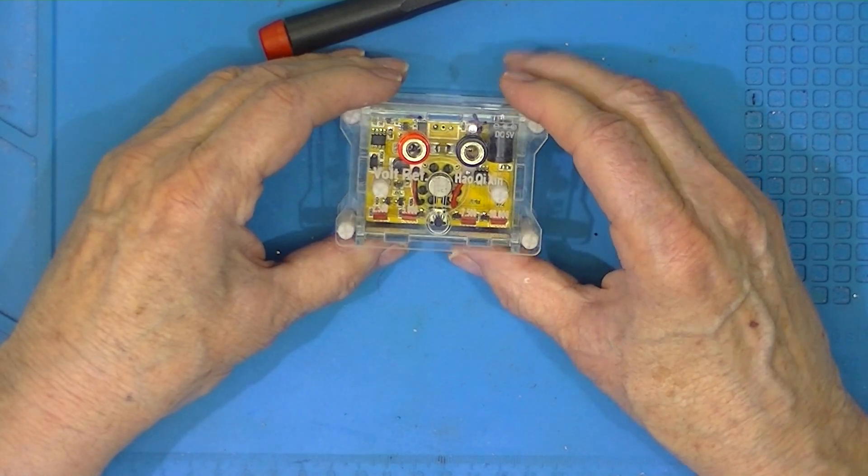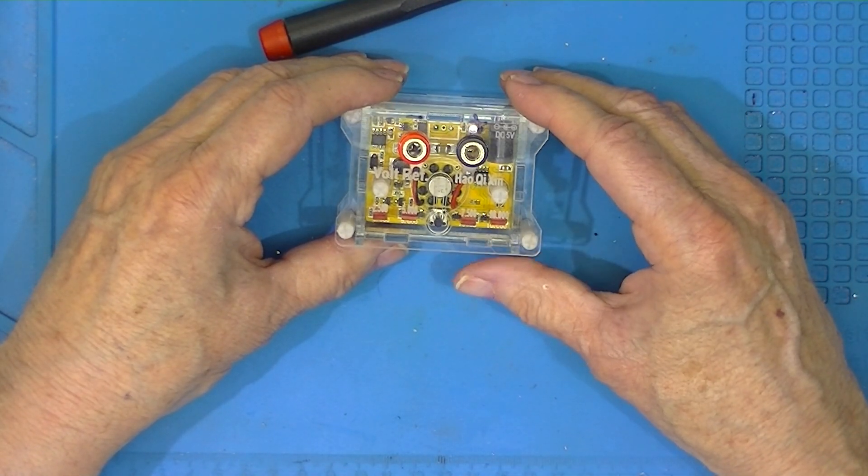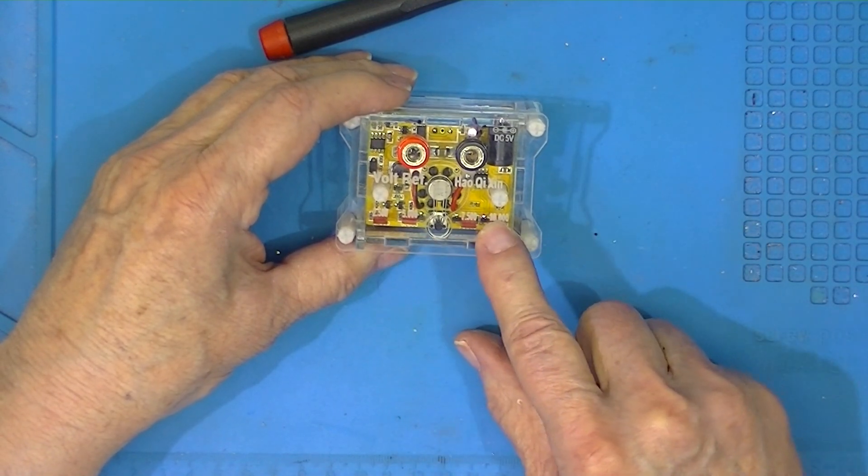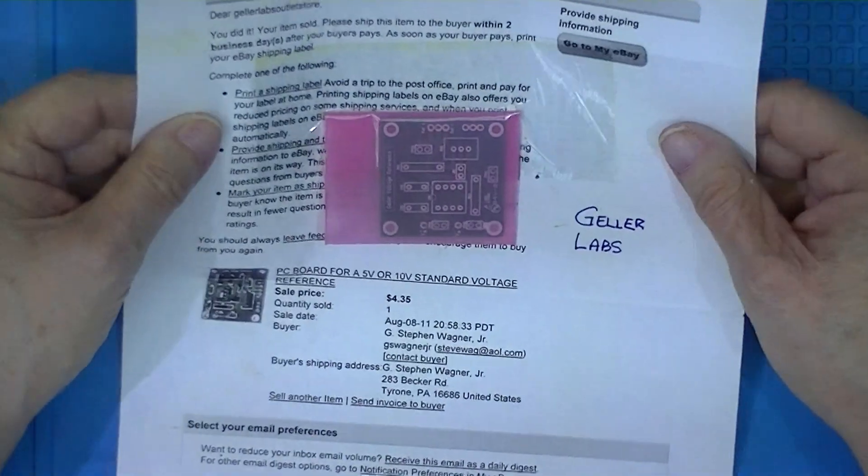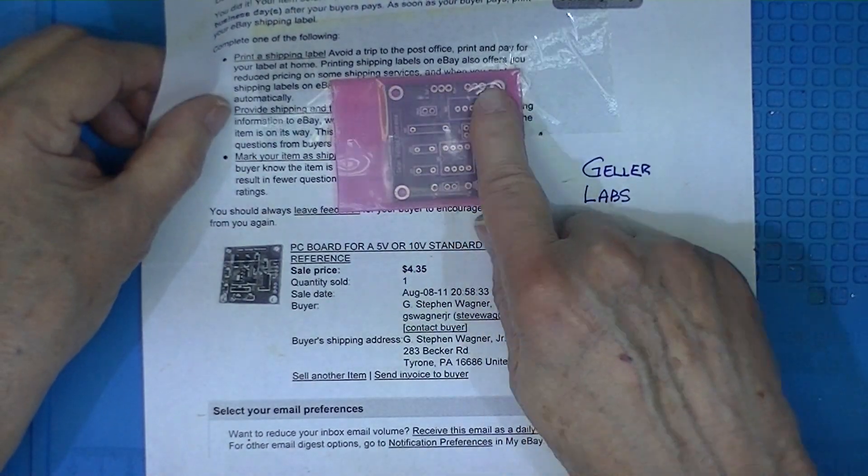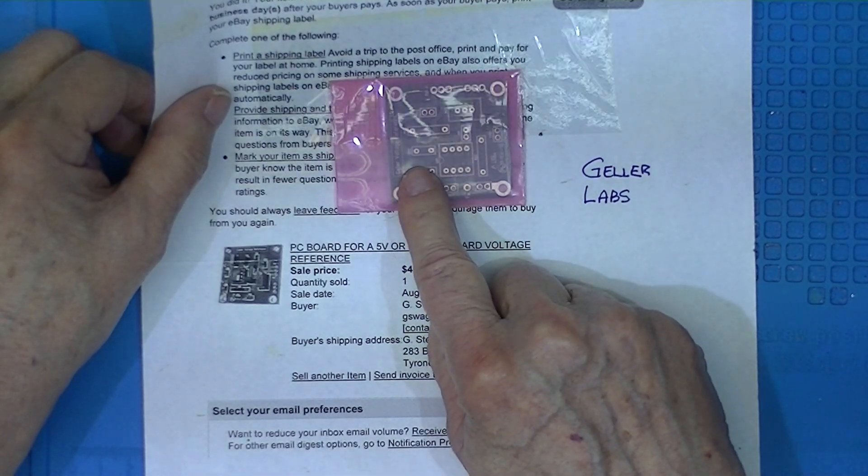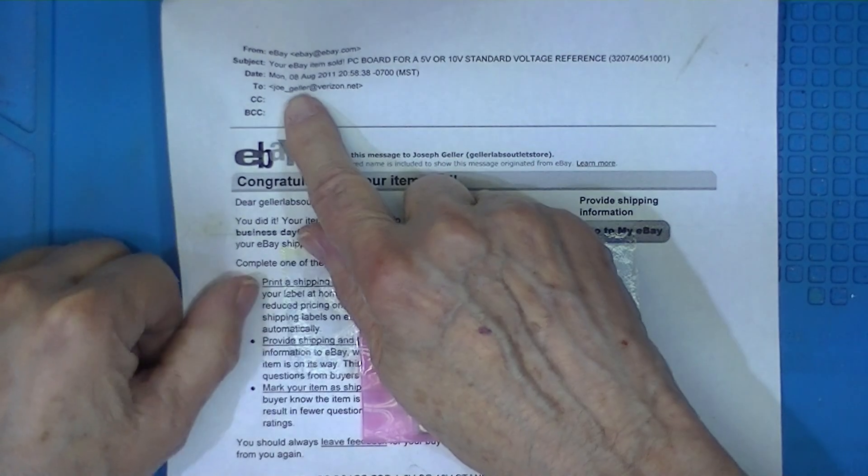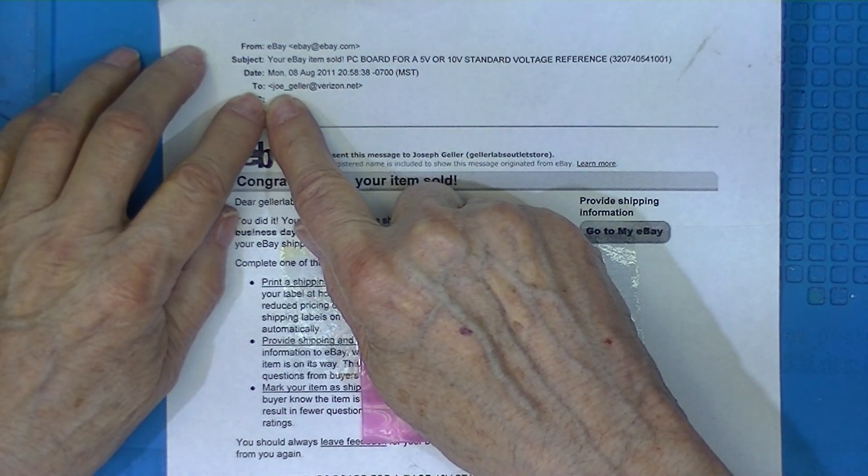Nowadays, we have a one-chip reference. It may produce multiple voltages or it may produce a single voltage. Years ago, I bought this circuit board with the intention of finishing it. It was sold by a guy by the name of Joe Geller, or Joseph Geller to be more correct.